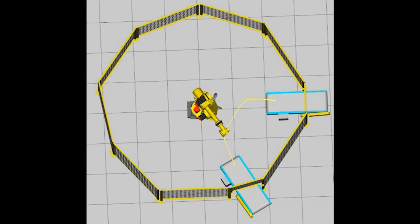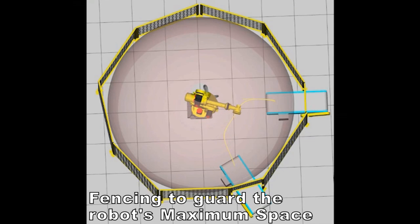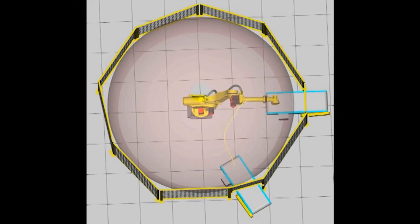Without DCS Cartesian Zone and Joint Position Checking or other robot limiting devices, the user needs fencing that guards the entire robot motion envelope, known as the maximum space.